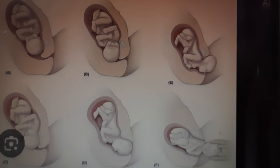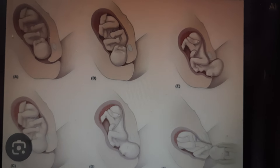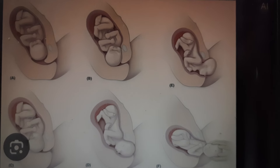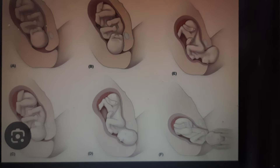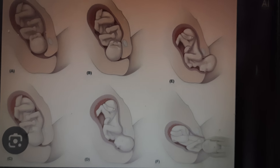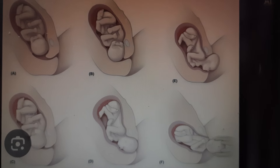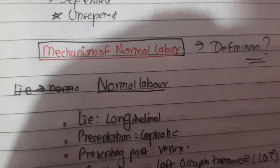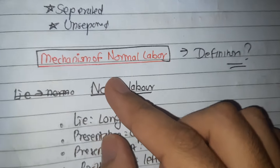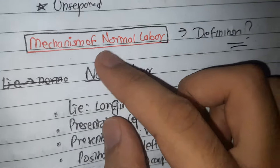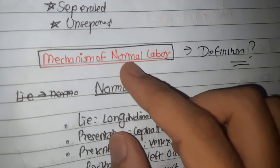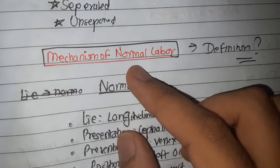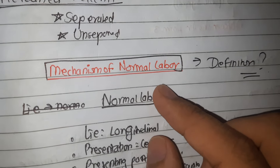Hello everyone, today we'll be talking about the mechanism of normal labor and the various cardinal movements that occur during labor, including engagement, descent, and various other steps. We will discuss each in as easy a manner as possible. The mechanism of normal labor is the series of movements that occur on the head of the fetus in the process of adaptation during its journey through the pelvis.